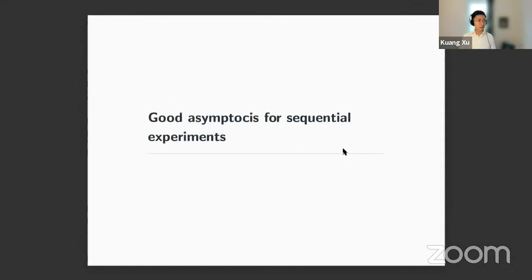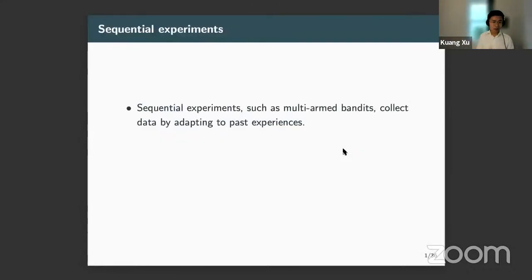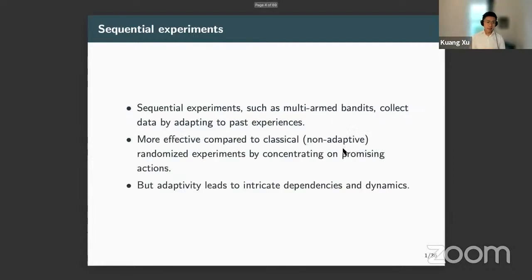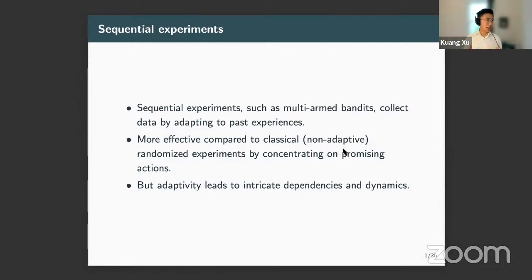The overarching goal is to find good asymptotic objects that are useful for understanding sequential experiments. Sequential experiments, such as the well-known multi-armed bandit problem, collect data by adapting the data collection action to past experiences. This is typically more effective than classical non-adaptive randomized experiments because actions are concentrated on more promising options. However, adaptivity often leads to fairly intricate dependency patterns and hard-to-analyze dynamics — that's the trade-off we have to deal with.